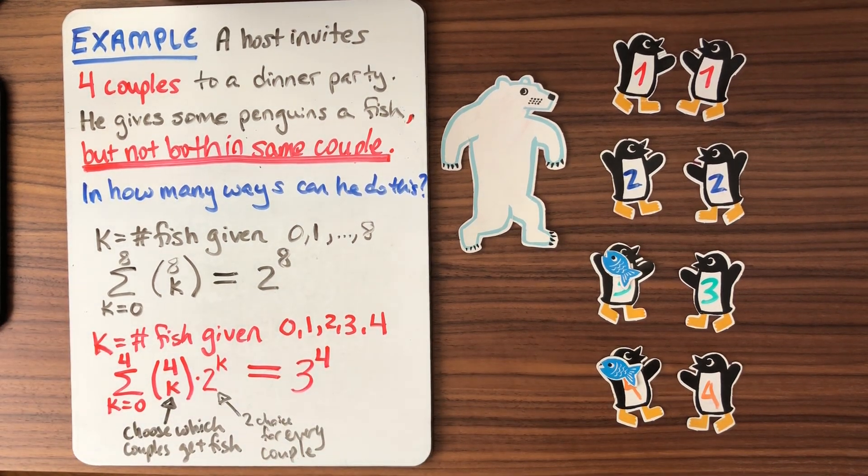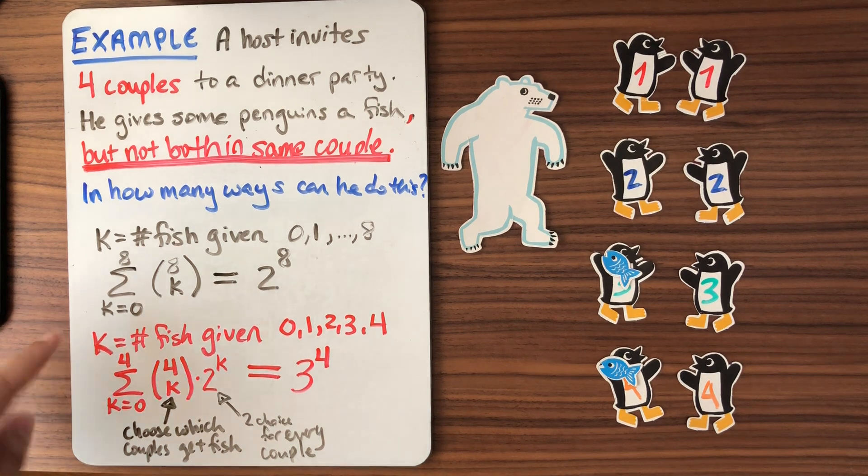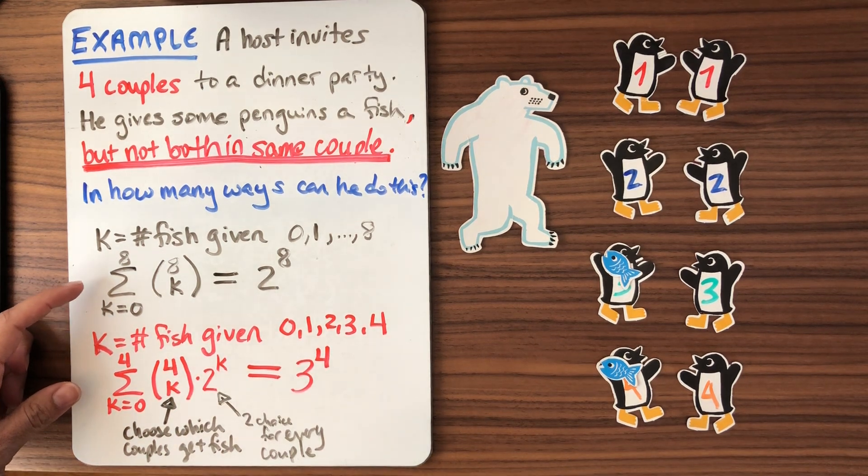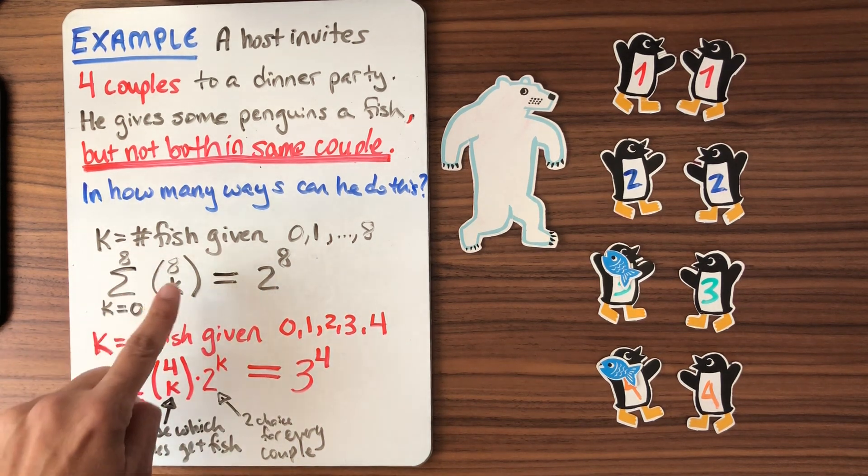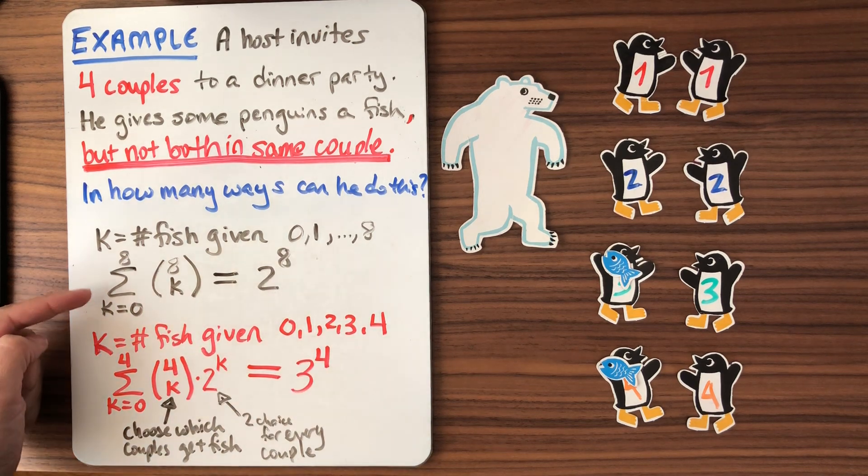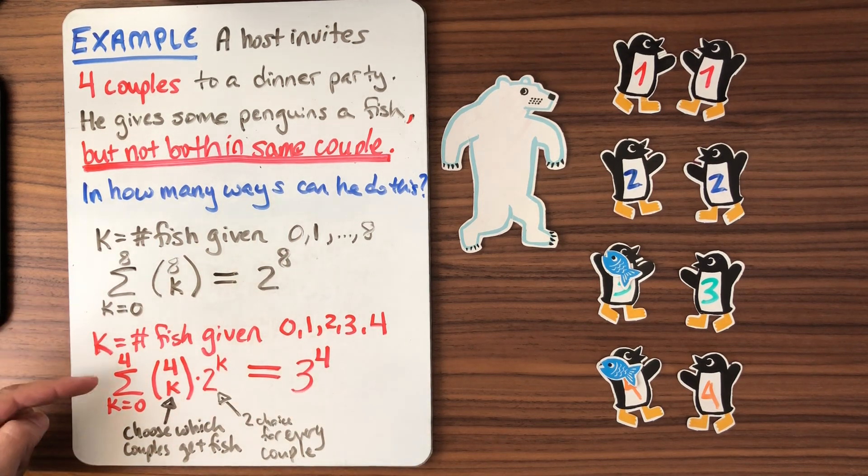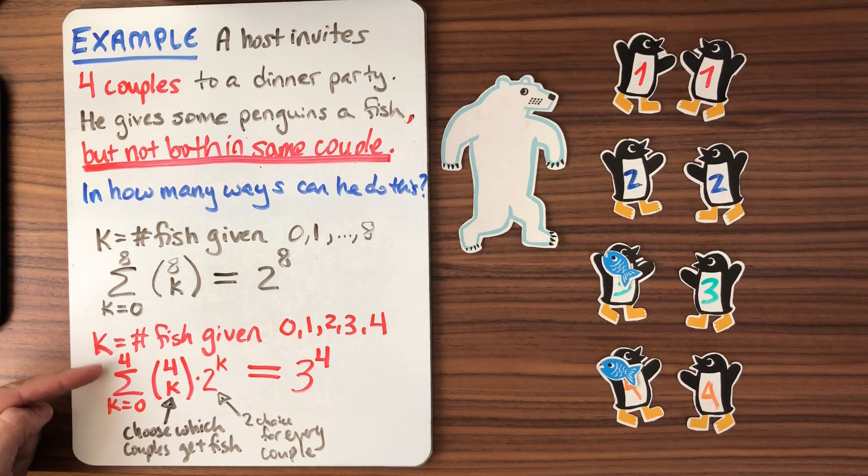And it turns out that what we've just discovered are two very interesting identities by counting in two ways. So two to the N is the sum from K equals zero to N of N choose K. There's nothing special about eight here. Similarly, if we have an even number, then three to the N is equal to the sum from K equals zero to N of N choose K times two to the K.